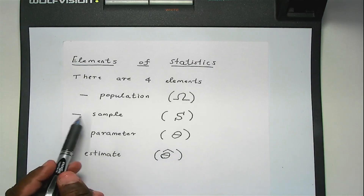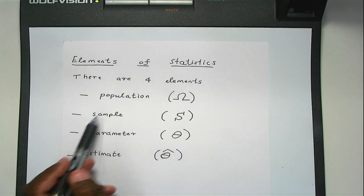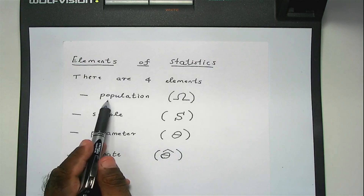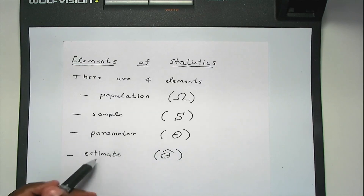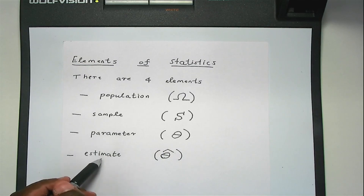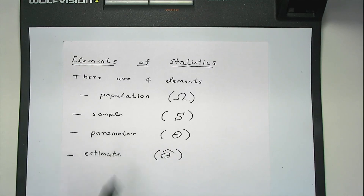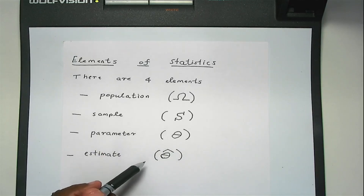These two are related to each other: the sample and the population are related. And these two are related to each other too: the parameter and the estimate. Let me give you a couple of examples on these four elements of statistics.